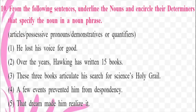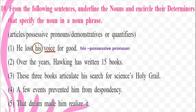The first sentence is: 'He lost his voice for good.' First, you underline the noun. The noun in the sentence is 'voice'. Then we encircle the determiner — 'his voice'. Now, 'his' comes under which category of determiners? Yes, 'his' is a possessive pronoun, and it is a determiner as well. So in this sentence, 'voice' is the noun and 'his', which precedes 'voice', is the determiner — a possessive pronoun.